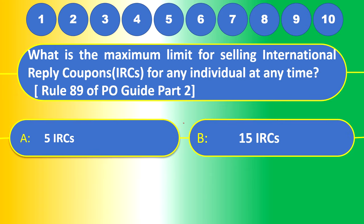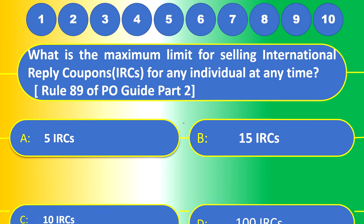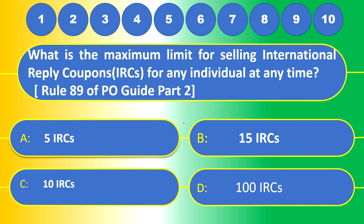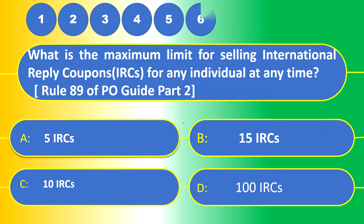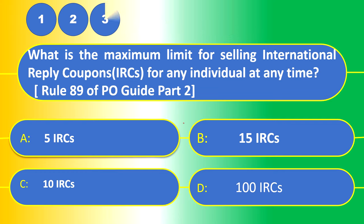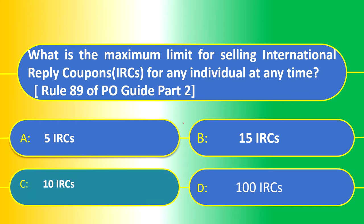Which of the following statements are correct? The perishable biological substances allowed entry into India under the Destructive Insects and Pests Act of 1914 are: (1) plants, (2) living insects, (3) fungi — Rule 88F of PO Guide Part 2. The answer is (d) — all three: plants, living insects, and fungi can be allowed into India as per the Destructive Insects and Pests Act of 1914. Next: the maximum limit for selling International Reply Coupons (IRCs) for any individual at any time — Rule 89 of PO Guide Part 2 — is 10 IRCs.